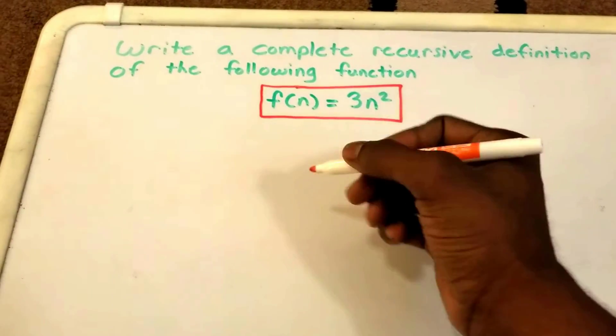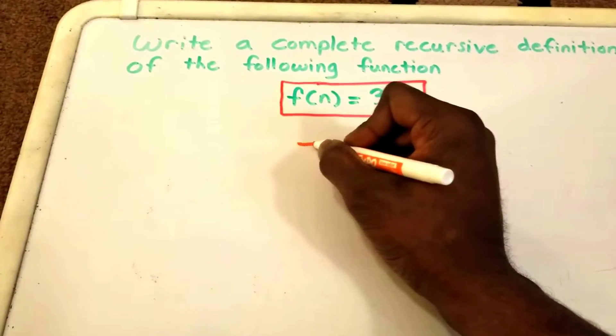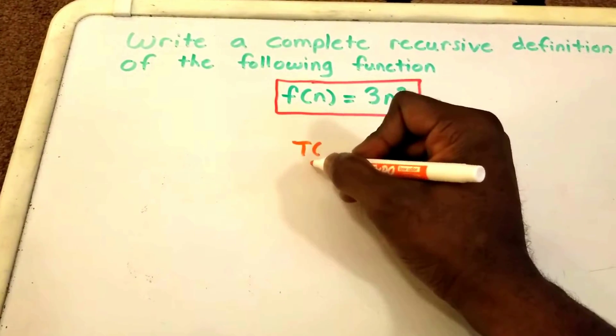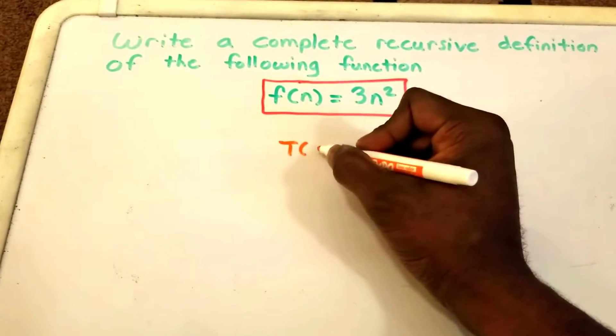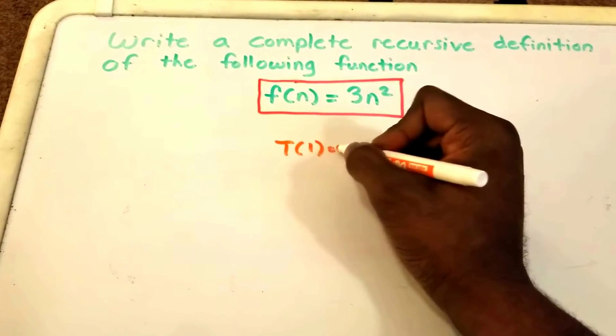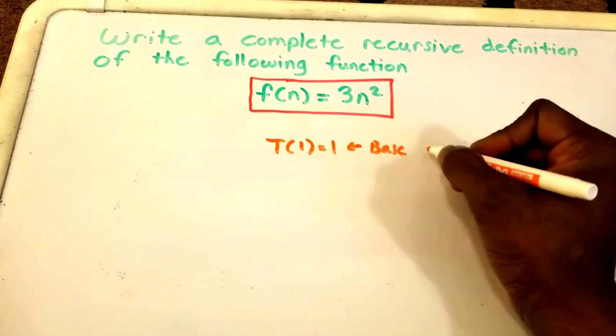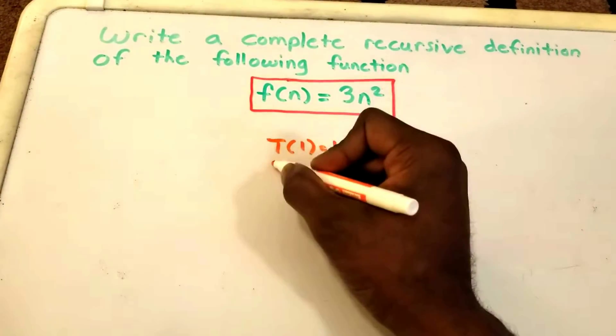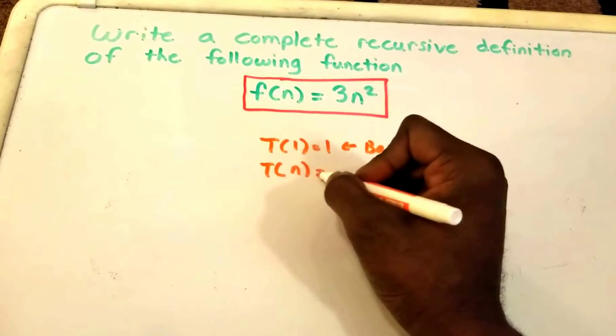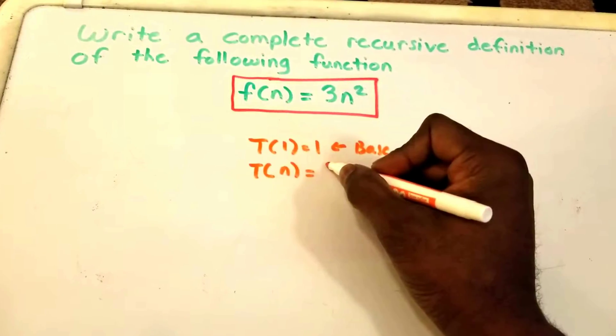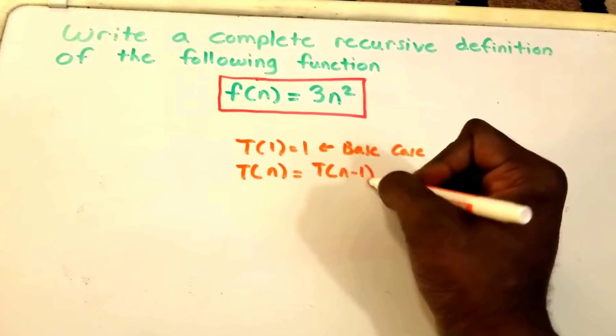Now usually in my videos we start off with a recursive case. So we have our base case, which would be something like t(1) = 1, which would be the base case. And then we have t(n) would equal something like t(n-1) + 1, which would be our recursive case.